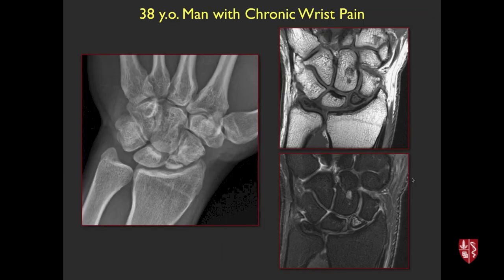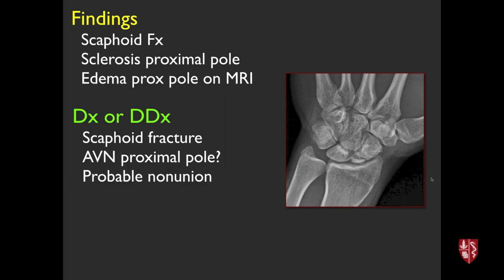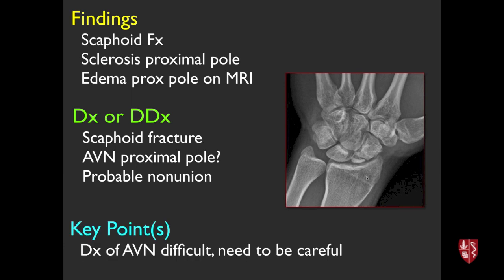38-year-old with chronic wrist pain. Sclerosis within the proximal pole of the scaphoid, a lucent fracture line, and edema in the proximal pole on MRI — this is a scaphoid fracture, probably a non-union given the chronic appearance. The sclerosis of the proximal pole may represent AVN. IV contrast is sometimes needed to assess whether the bone enhances, because true AVN means the bone cannot heal, whereas some residual vascularity may allow healing with appropriate surgery.